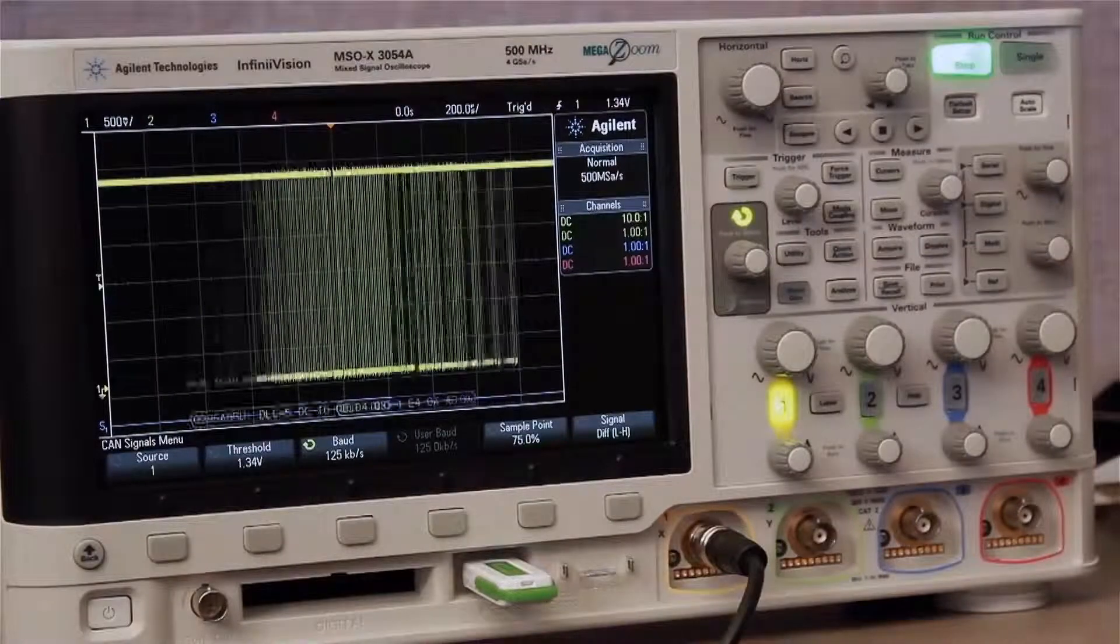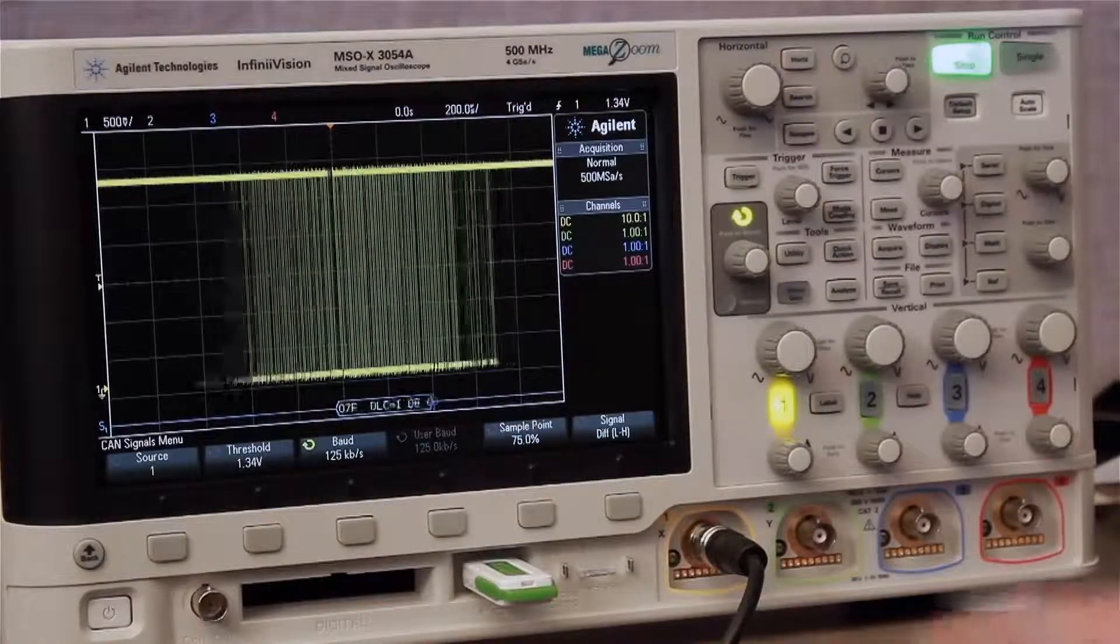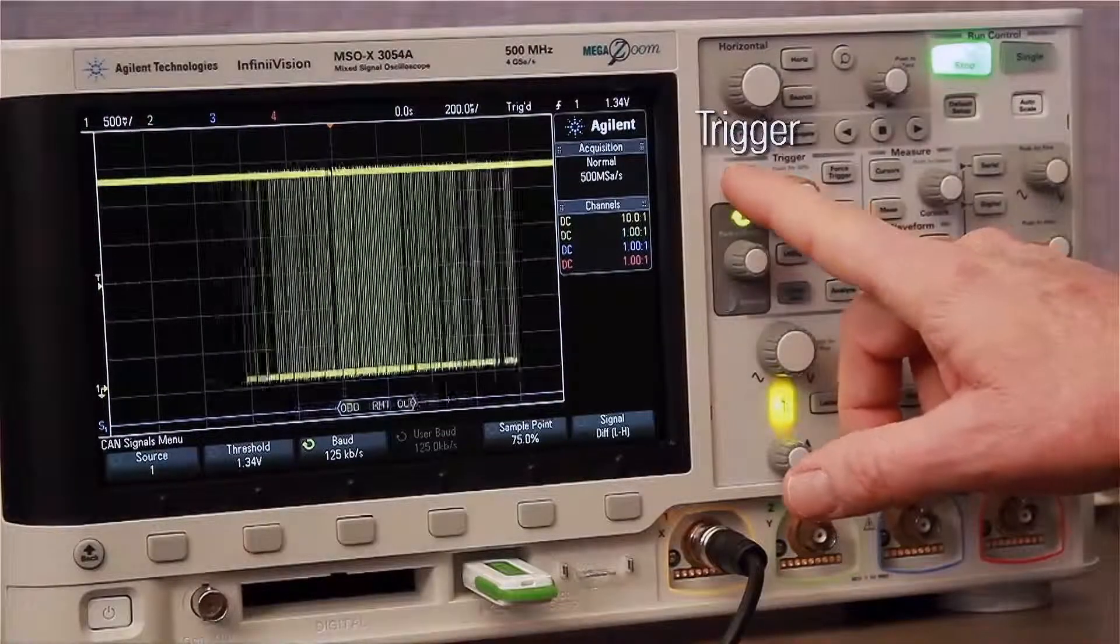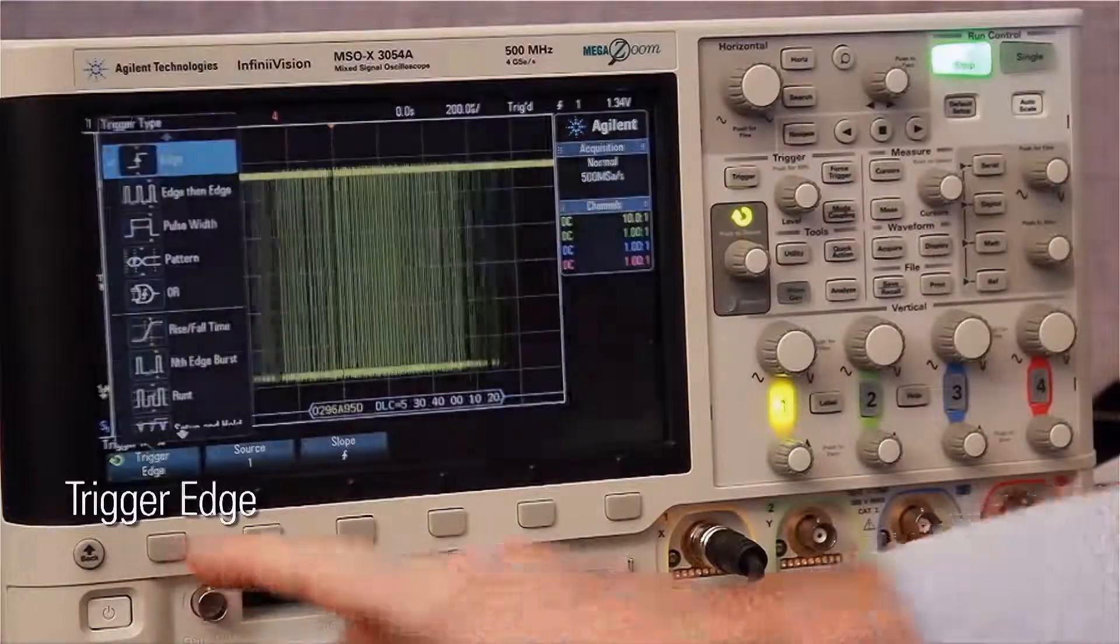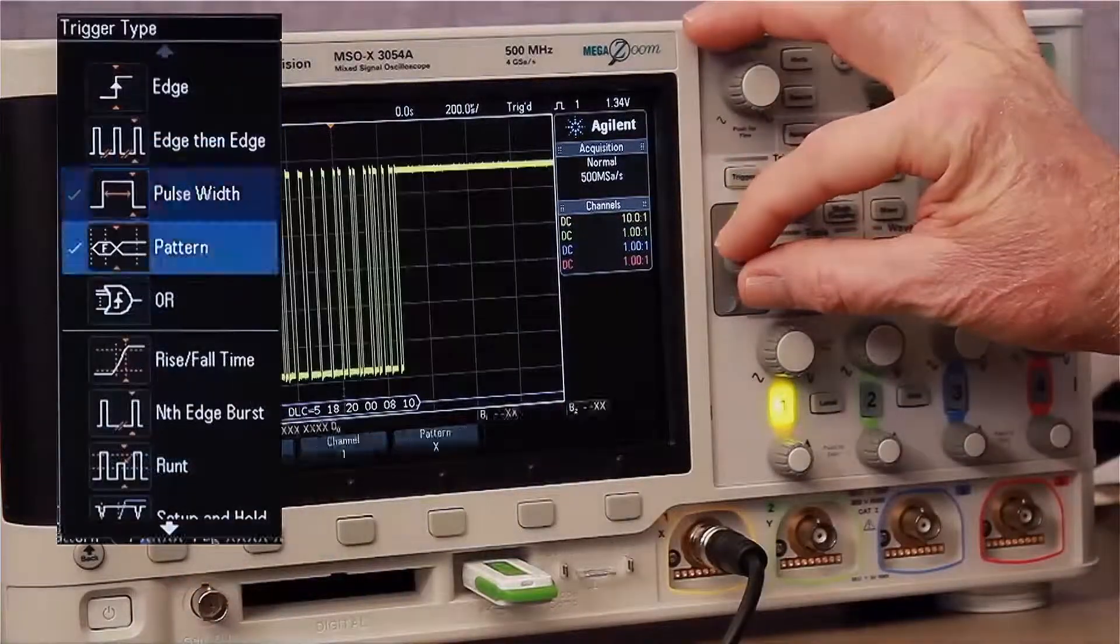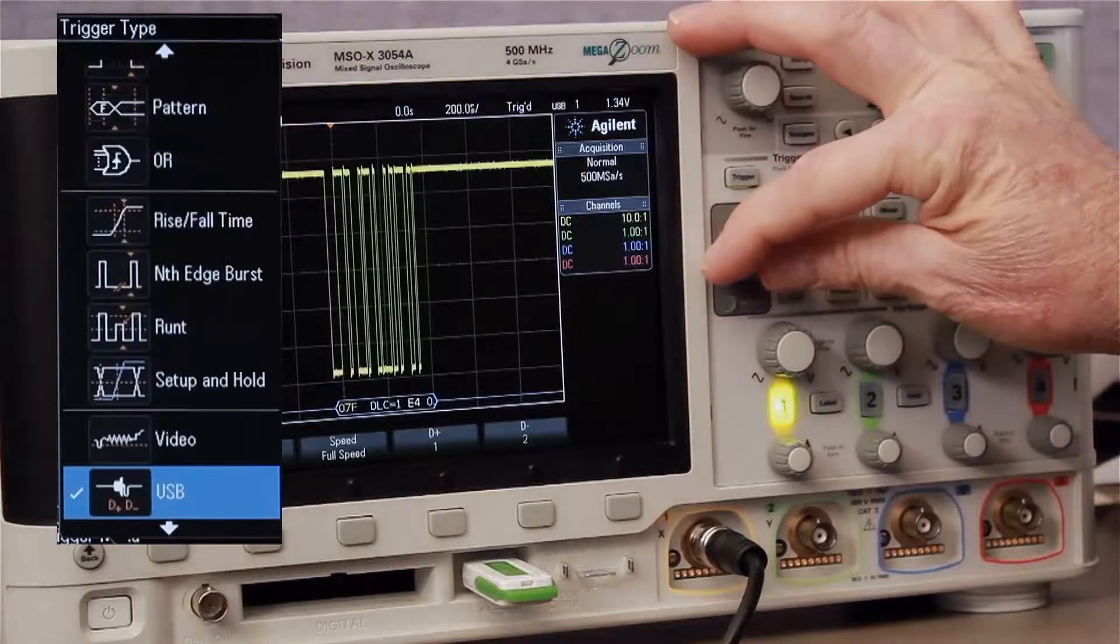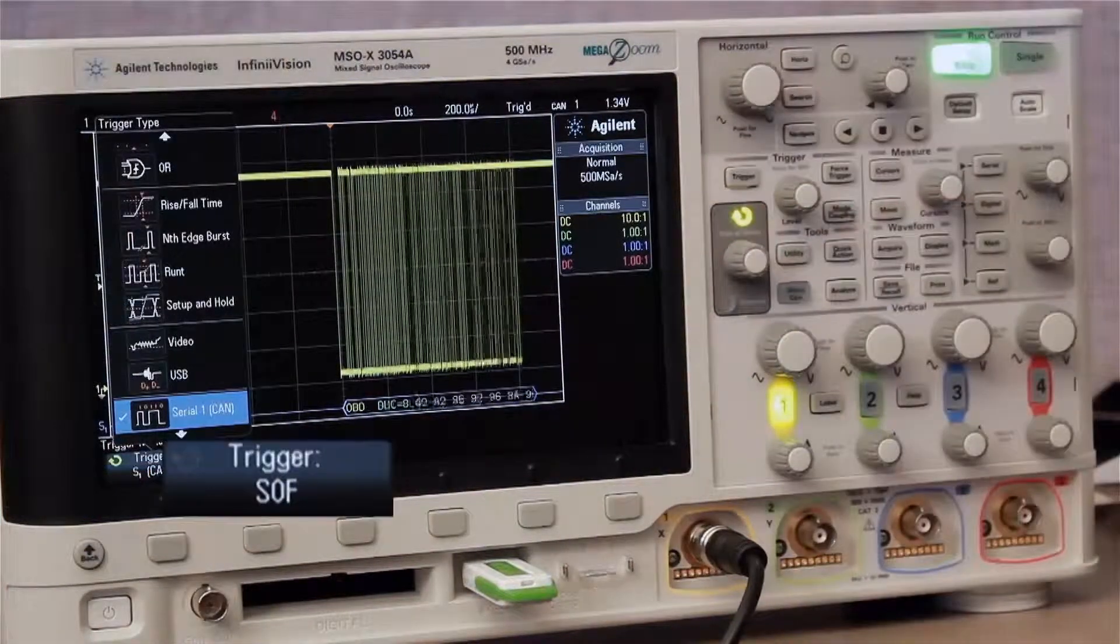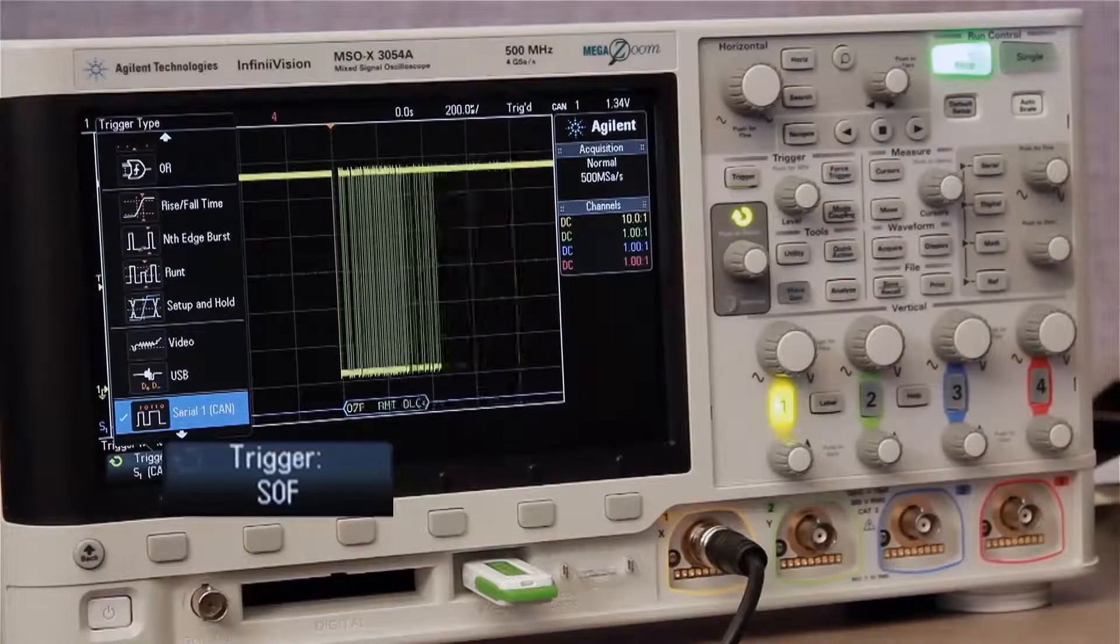To establish a more unique trigger condition, press the scope's front panel trigger key, then change from triggering on any edge crossing to triggering on CAN signals. The default CAN trigger condition is to trigger on the start of any frame.